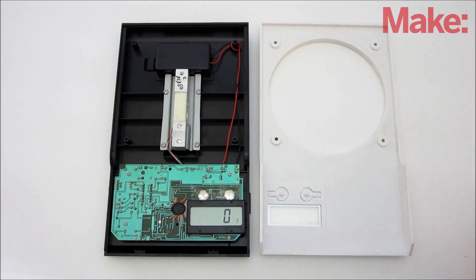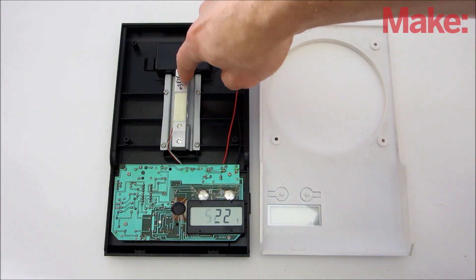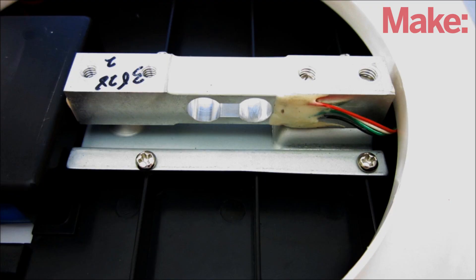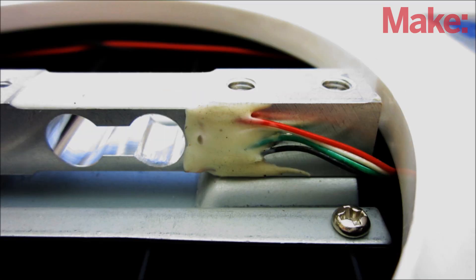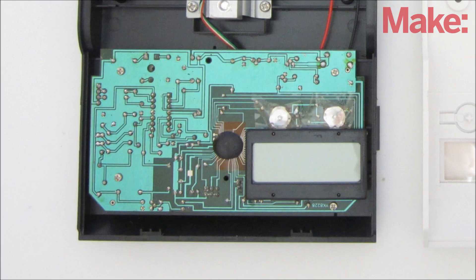Inside a digital scale, you'll find two main parts. There's a load cell that senses the weight of an object. This is typically a thick metal bar with a sensor on the side that measures how much the bar deforms when a load is applied. There's also an external circuit that processes this data and displays the weight on an LCD screen.